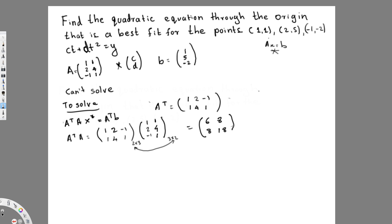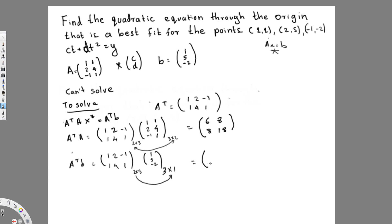Now find A transpose b using the same approach. A transpose is [1, 2, -1 / 1, 4, 1] and b is [1, 5, -2]. This is 2×3 times 3×1, so you get a 2×1 matrix. The final answer is [13, 19].